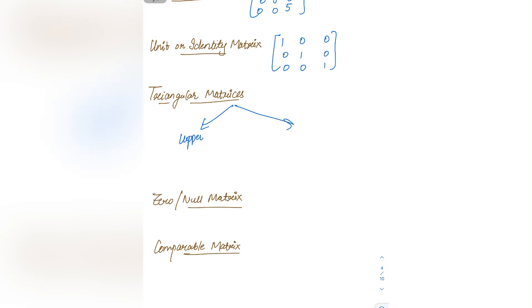Next is the scalar matrix — a matrix in which all the diagonal elements are the same and all other elements are zero. In short, it is a diagonal matrix in which all diagonal elements are similar. Then we have the unit or identity matrix — it is a diagonal matrix in which the diagonal element is unity, that is 1.